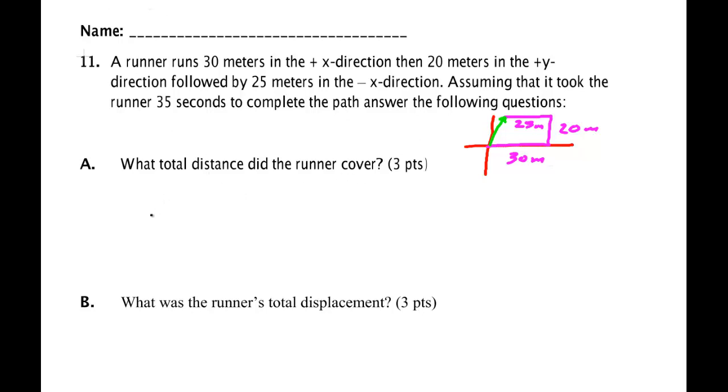What was the total distance covered by the runner? Well, D is going to be 30 meters plus 20 meters plus 25 meters is 75 meters.